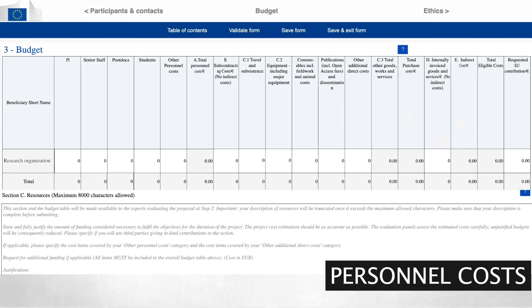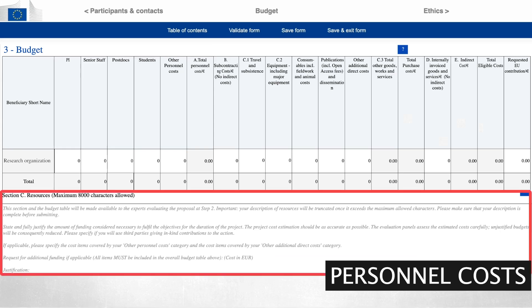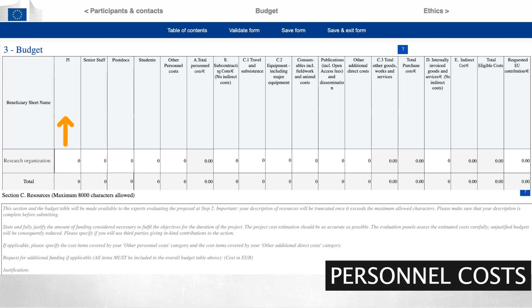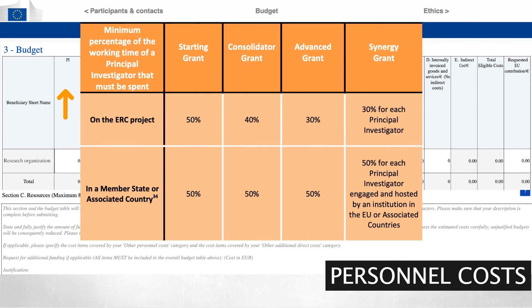Personal costs usually consume a significant part of the project budget. In the budget table, personal costs are divided into several subcategories. In the explanatory part, you will be invited to provide details for each subcategory. Remember, principal investigators must indicate their time commitment to the project with respect to minimum values, and the budgeted amounts must always reflect this time commitment.